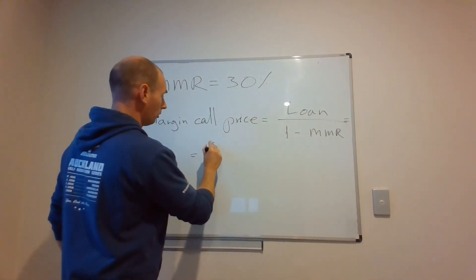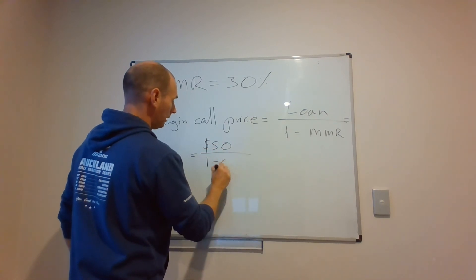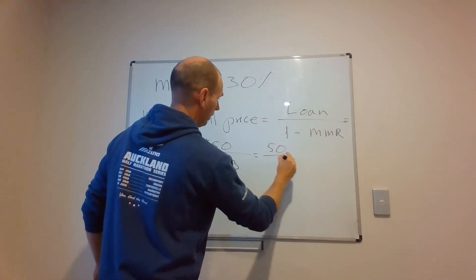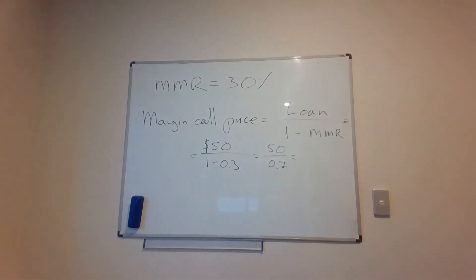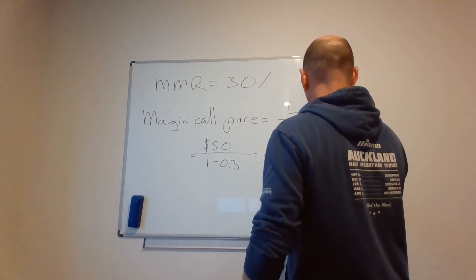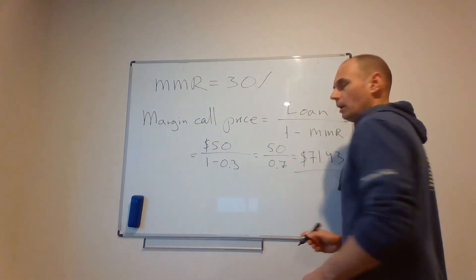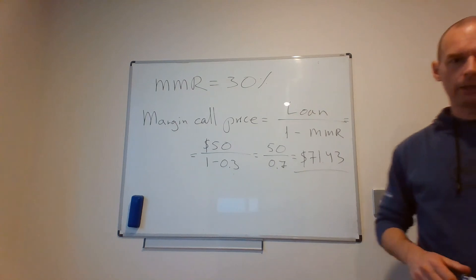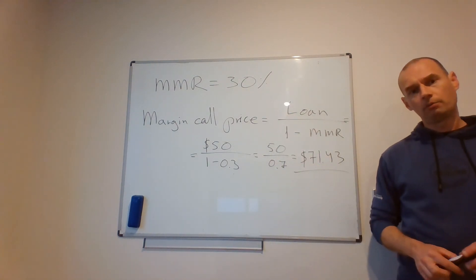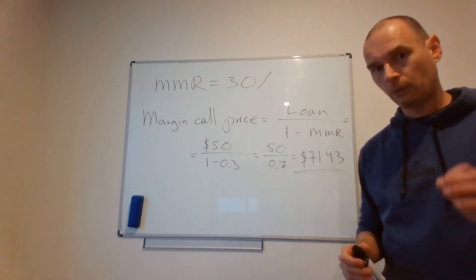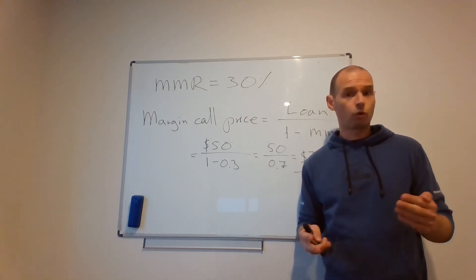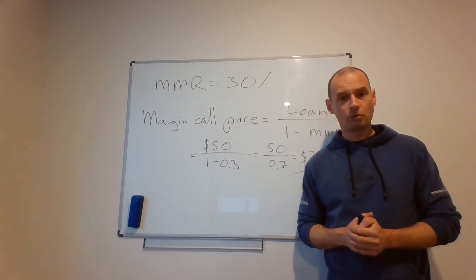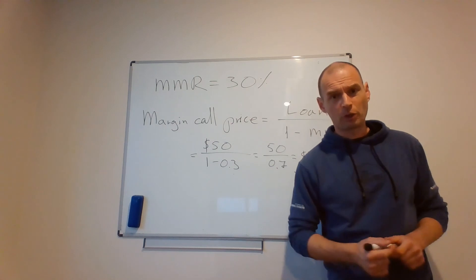How do we compute the margin call price? It's the loan divided by 1 minus MMR, which in our case, $50 is the loan, 1 minus 0.3 or 50 divided by 0.7. $71.43. If the value of this share drops from $100 to $71.43, the broker will no longer feel comfortable holding your shares as a collateral for that loan and will issue a margin call, either selling off your shares or requesting you to deposit cash into your account, thus restoring the initial margin requirement of 50%.